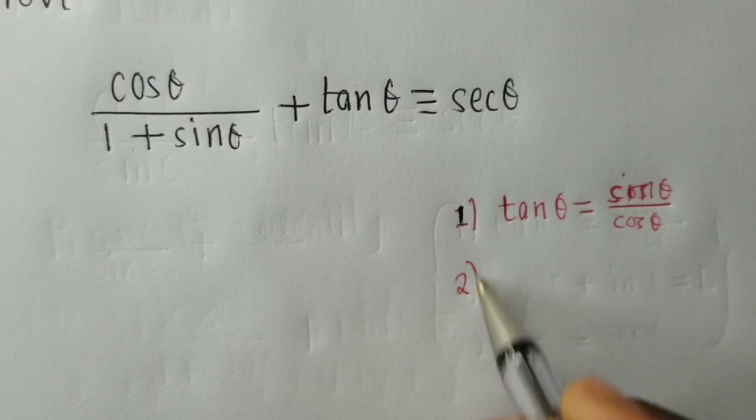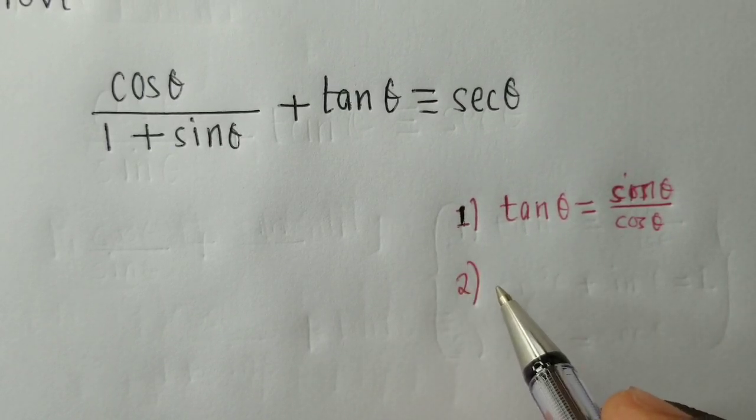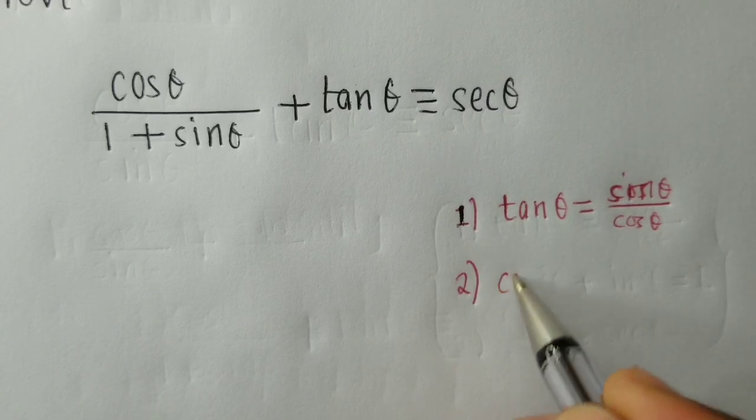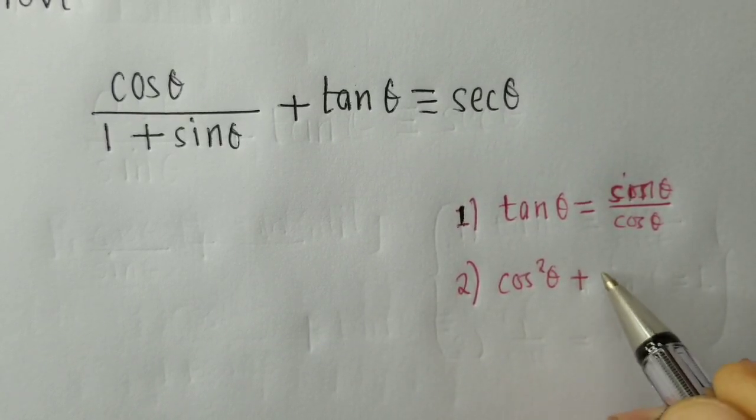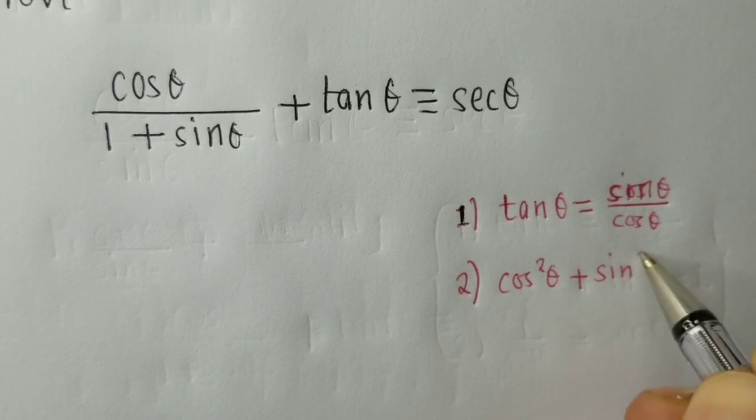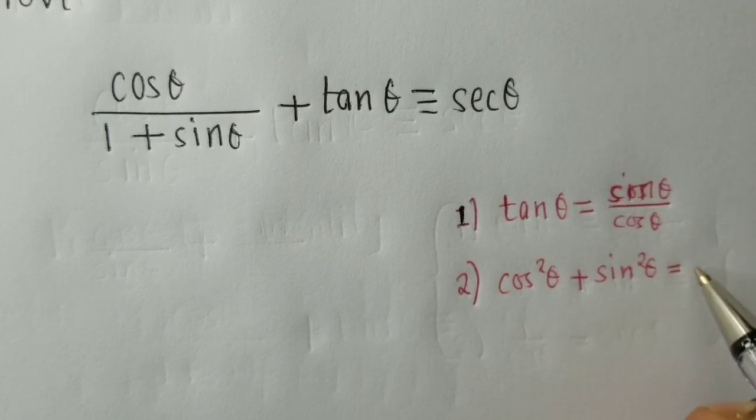Number 2, the second identity that we need to know is that cos theta squared plus sin theta squared is equal to 1.